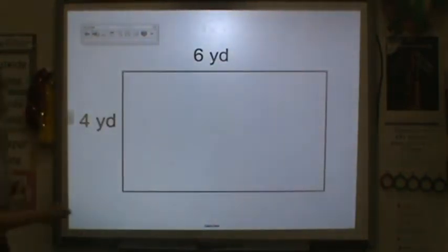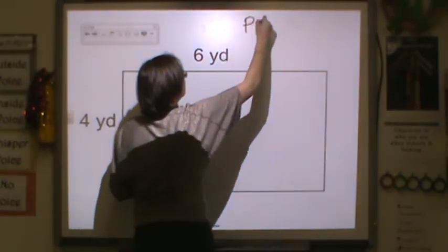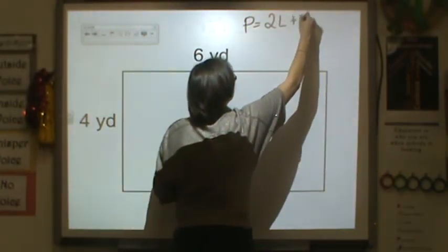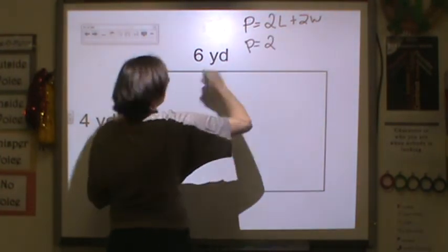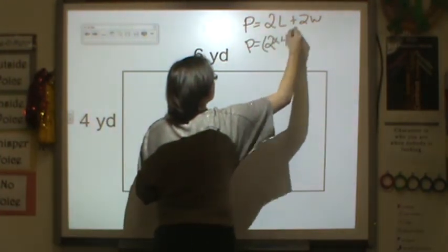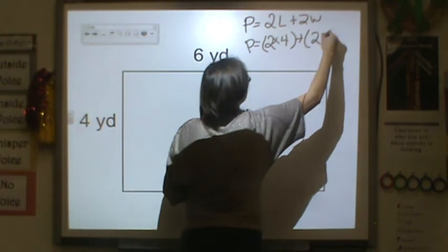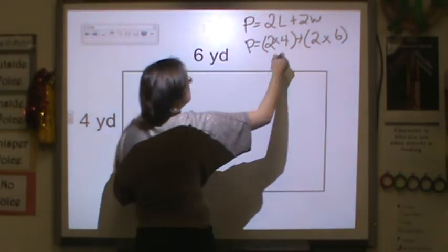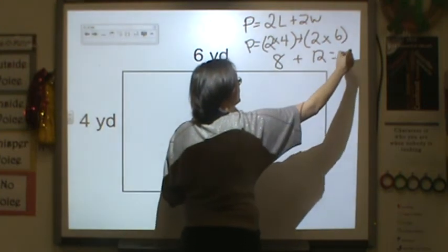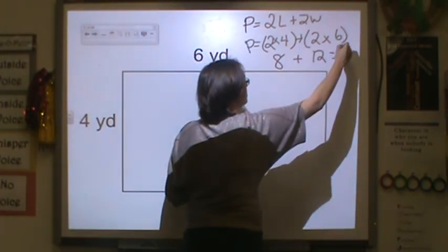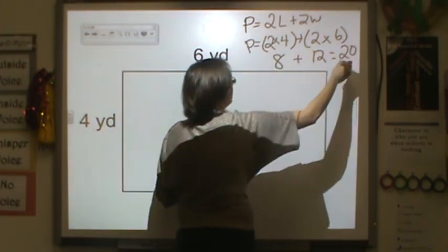Now, we have yards. Again, perimeter is equal to 2L plus 2W. So, perimeter is equal to 2 times 4, plus 2 times 6. 2 times 4 is 8, plus 2 times 6 is 12. That is equal to 20, and we're in yards.